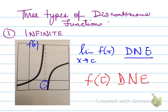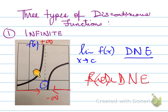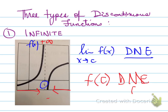To further explain infinite discontinuity: as we take the limit from the left side we see it approaches positive infinity, and the right side approaches negative infinity. So the function doesn't exist on either side — one side goes to positive infinity, the other to negative infinity, and at that value the function does not exist.